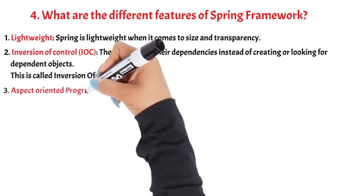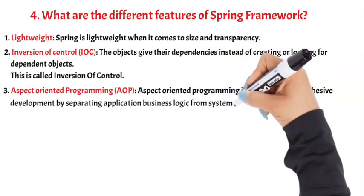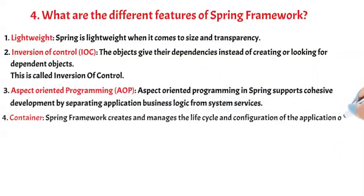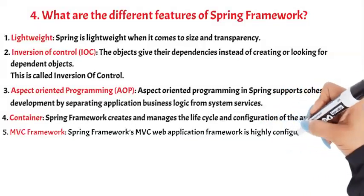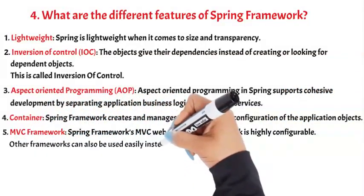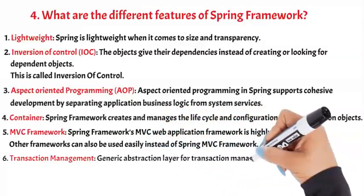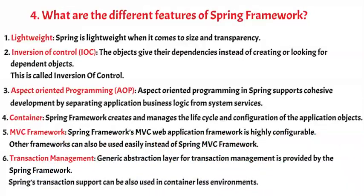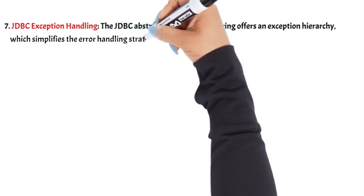3. Aspect-Oriented Programming (AOP): Aspect-oriented programming in Spring supports cohesive development by separating application business logic from system services. 4. Container: Spring Framework creates and manages the life cycle and configuration of the application objects. 5. MVC Framework: Spring Framework's MVC web application framework is highly configurable; other frameworks can also be used easily instead of Spring MVC. 6. Transaction Management: A generic abstraction layer for transaction management is provided by Spring Framework, and Spring's transaction support can also be used in container-less environments. 7. JDBC Exception Handling: The JDBC abstraction layer of Spring offers an exception hierarchy which simplifies the error handling strategy.